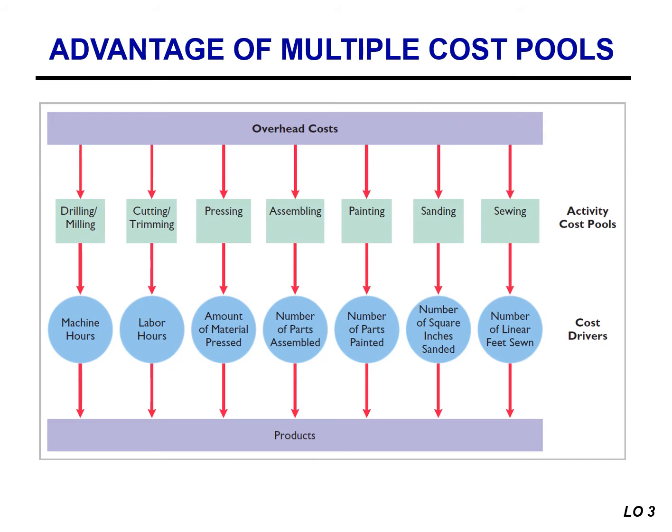we identified five activity cost pools: manufacturing, setups, purchase ordering, product development, and property and plant. The manufacturing cost pool reflected multiple manufacturing activities, including machining, assembling, and painting. These activities were included in a single pool for simplicity.